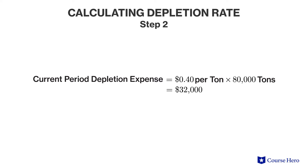Second, the company multiplies the depletion rate by the quantity extracted to arrive at depletion expense. Therefore, the current period depletion expense equals $0.40 times 80,000 tons, which is $32,000. The depletion amount is then recorded as an expense on the income statement as a debit, and the credit comes from an accumulated depletion account, which is a contra asset account used to reduce the carrying amount of the natural resource from its initial cost to an amount net of depletion already taken.